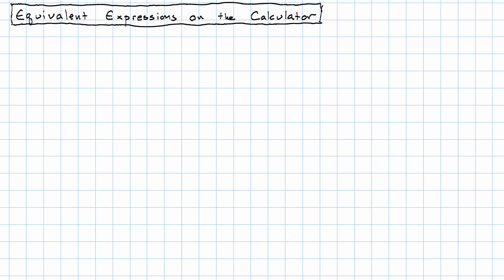In the last video, we saw that we can know that two expressions are not equivalent if we can find at least one number for which they're different. But we can't really know that they are equivalent if we try a number and they do give the same value.